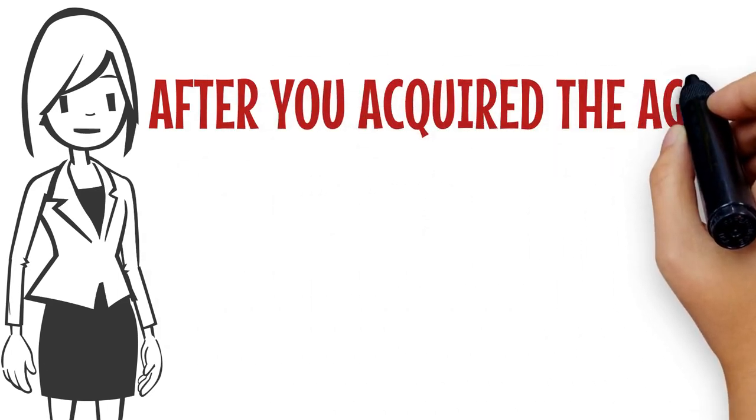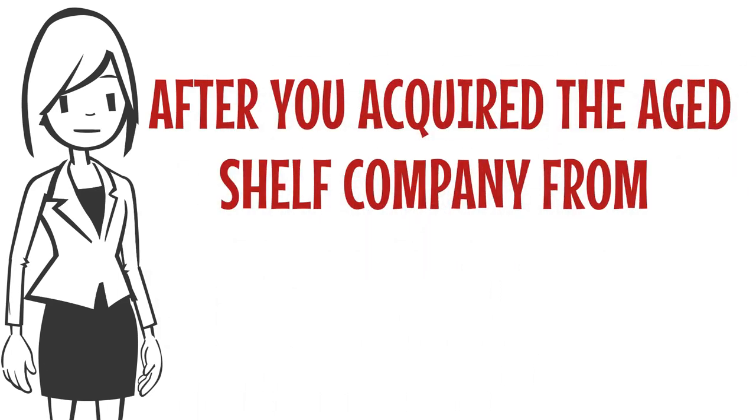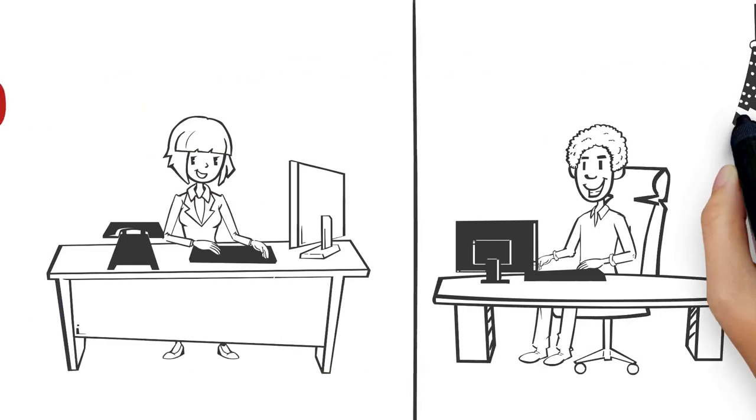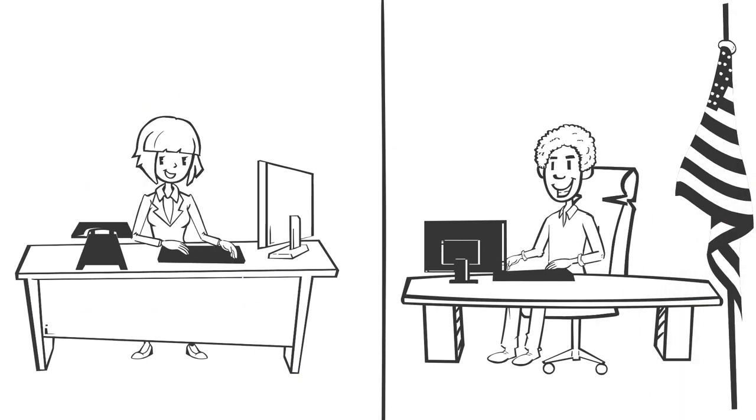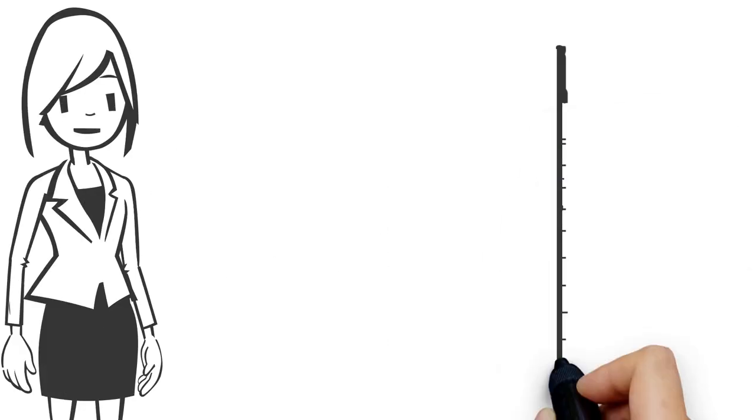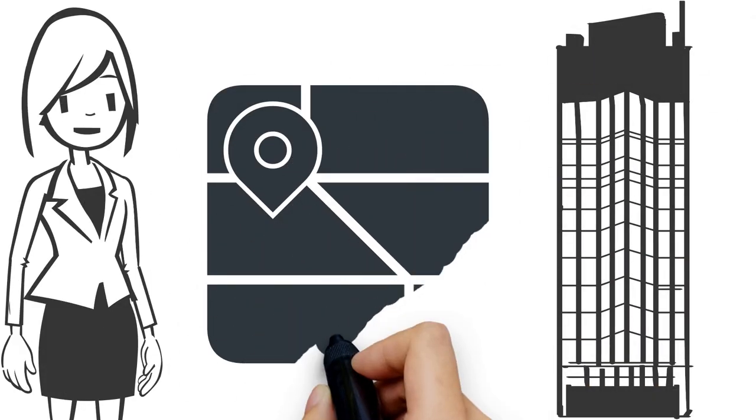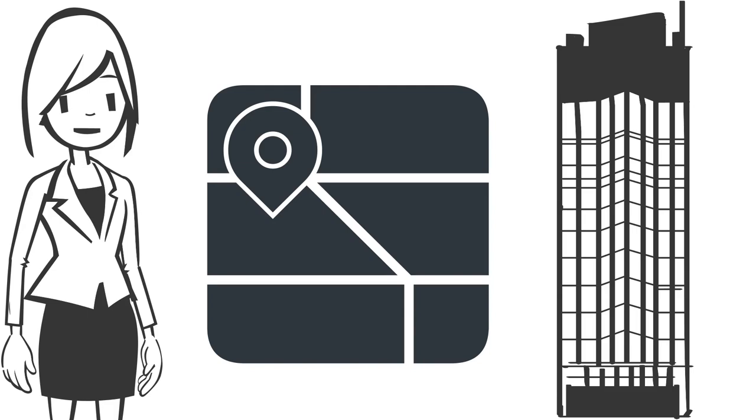After you acquired the Aged Shelf Company from assetprofile.com, we update the Secretary of State with the new corporate officers and the new business address domestically. The reported address of the company and officers of the company should match in the state where the company was originally filed and in the state where the company will do business.